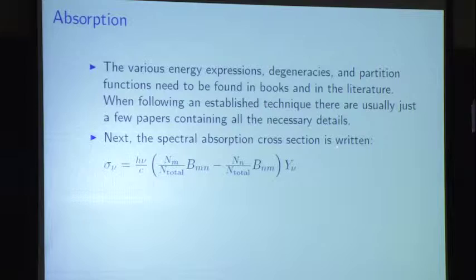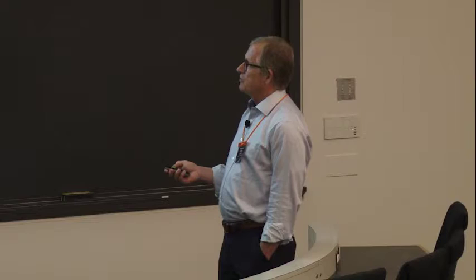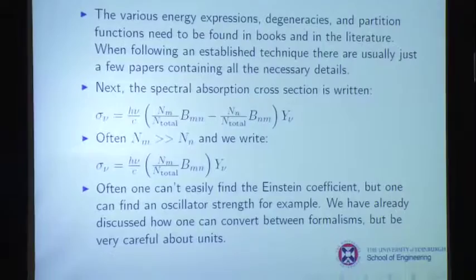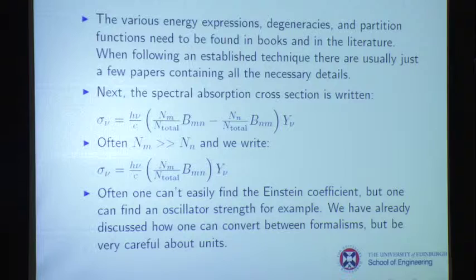The spectral absorption cross-section is how I like to look at things. Sometimes you can grab the Einstein coefficients — LIFBASE mostly has Einstein coefficients, while HITRAN has line strengths. You can convert back and forth. If you go to LIFBASE, you can go straight to a cross-section with the Einstein coefficients they give you. Often the lower state is much more populated than the upper state, and you can just write it that way instead. If you can't find the Einstein coefficient, you can find other things, and there's an entire chapter in my book talking about how to convert.